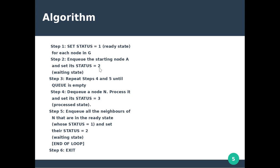The waiting state means the node is in the queue. We insert node A into the queue Q. In the third step, we repeat steps four and five until Q is empty. In BFS, we use a queue data structure, whereas DFS uses a stack.